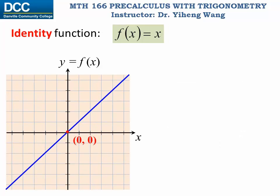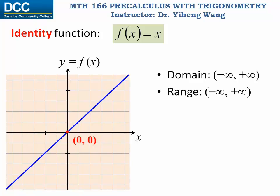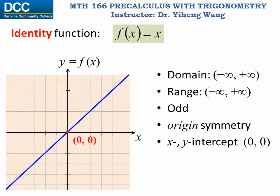The other special linear function is the identity function f(x) equals x. Its graph is a straight line at a 45-degree angle with each axis. The domain includes all real numbers and the range also includes all real numbers. It is an odd function, which means it is symmetric about the origin. It has the same x and y-intercept, which is (0, 0), the origin. And it is always increasing.